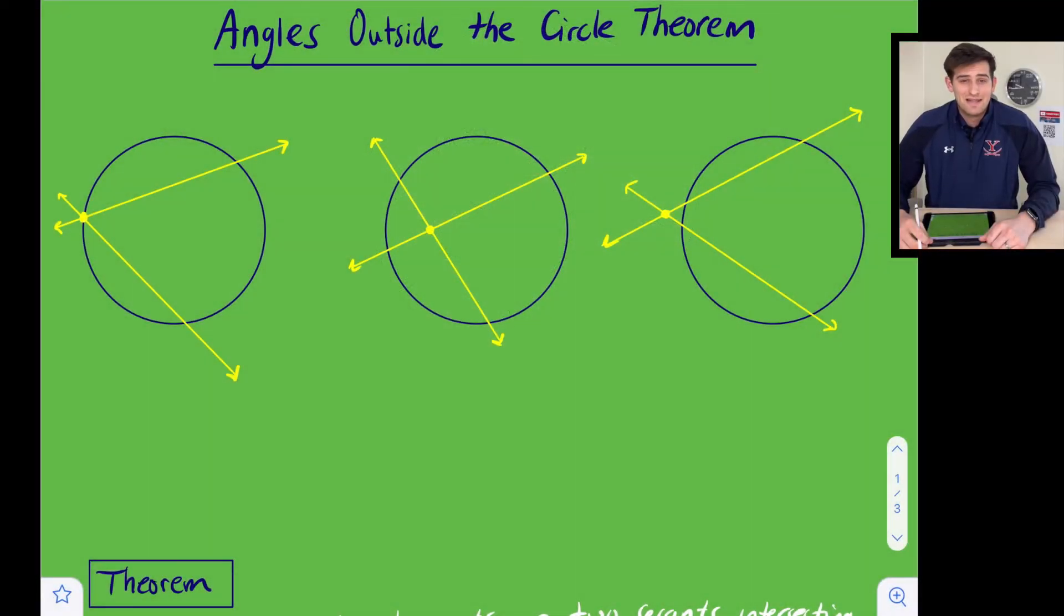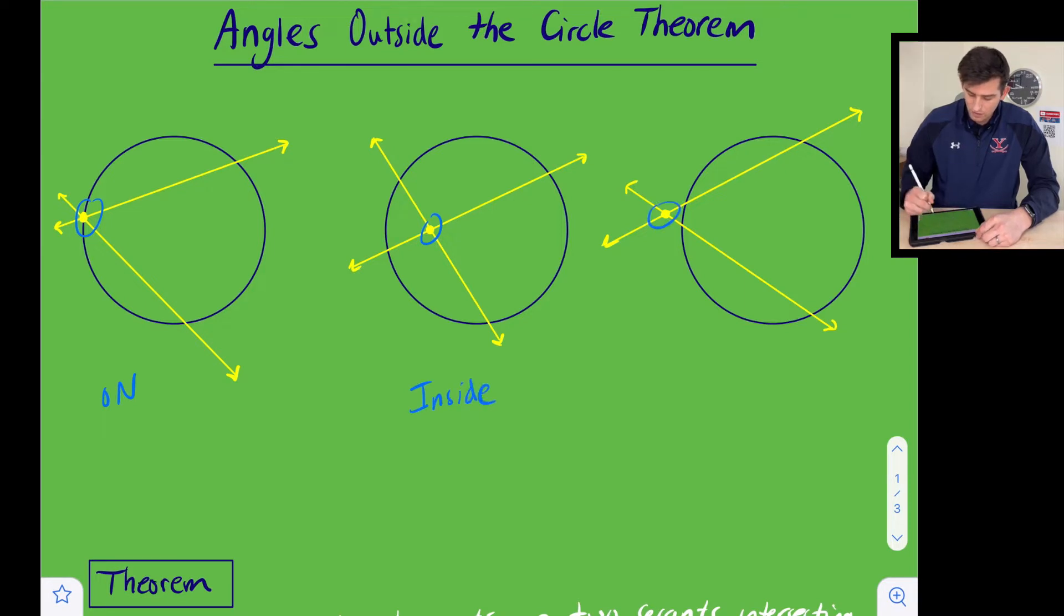Hello everyone, in this video we're going to talk about angles outside the circle theorem. If we think about two non-parallel lines that intersect a circle, there's really three intersection points that could happen. These two lines could intersect on the circle, they could intersect inside the circle, or what we're going to talk about in this video, they could intersect outside the circle.